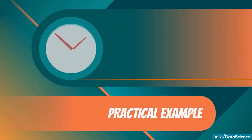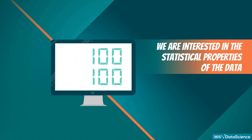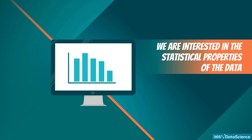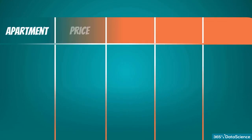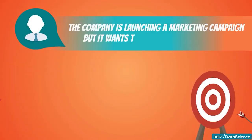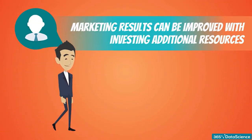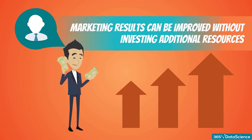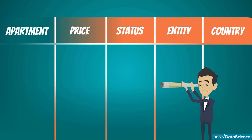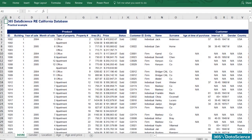Finally, it's time for the practical example. In this lesson, we will see an actual database of a real estate company operating in California. We are interested in the statistical properties of the data. The database has been reordered and cherry-picked variables imported into a spreadsheet. The labels of the columns have been made friendly even for those without real estate experience, and we have altered the names of customers for confidentiality reasons.